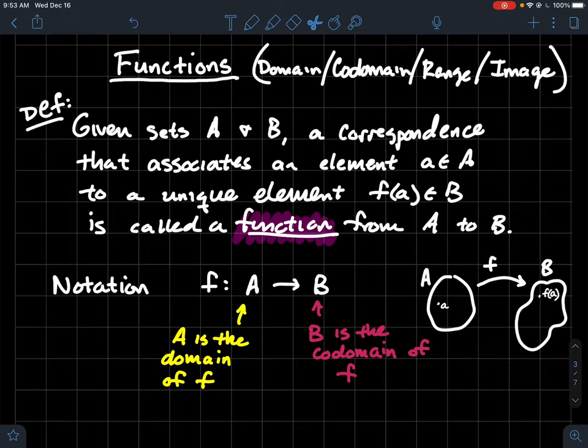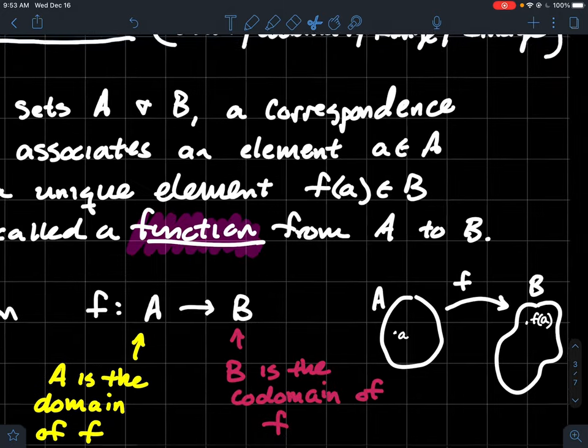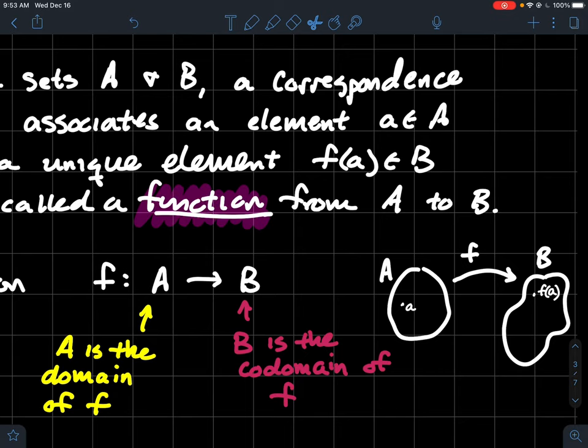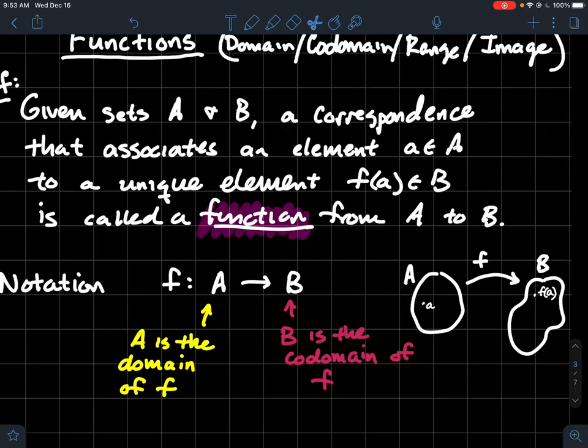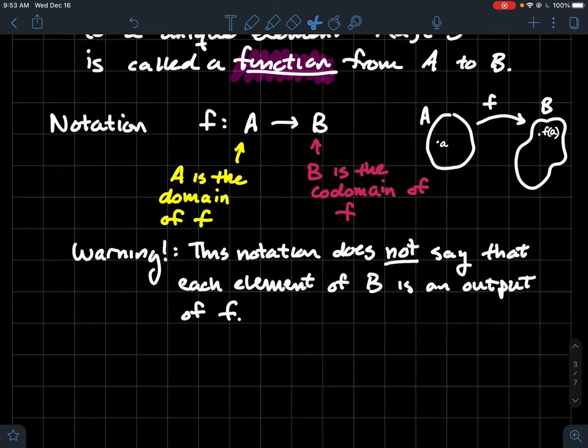So I'll come back to that point in just a moment, but it's also typical to, I like to represent these things as blobs. So like I've got my set A to the left, and it's that circle, and I've got the set B to the right. And so f is a way to go from A to B. I plug in little a to that function f, and it should spit out some point that lands in B, or some element of B. Now what was I saying a minute ago? So this notation, f colon A to B, that does not say that each element of B is an output of f.